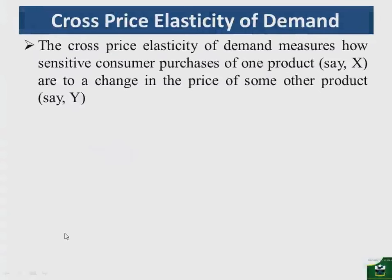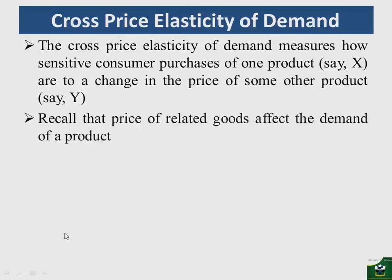The cross price elasticity of demand measures how sensitive consumer purchases of one product — say commodity X — are to a change in the price of some other product, in this case commodity Y. If we are looking at only commodity X and commodity Y, we want to see how responsive consumers will be to changes in the price of one commodity. If we take X and Y to be related goods, we want to see how consumers behave whether the commodities are substitutes or complements.